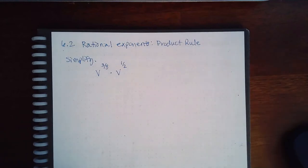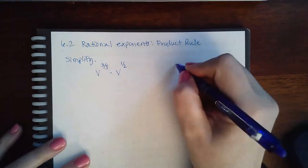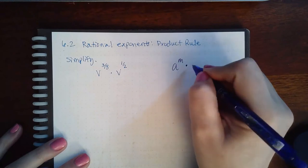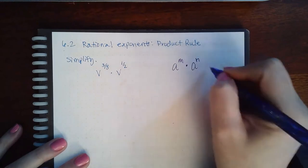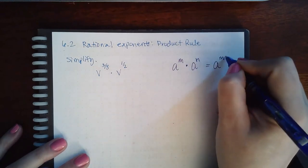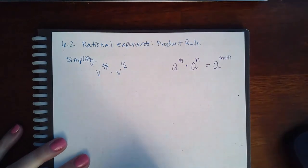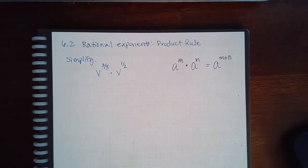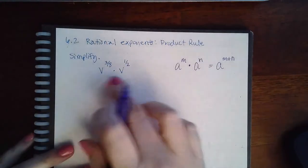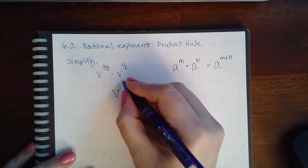Here we have simplifying rational exponents using the product rule. When you have variables, you can put them together. There is a rule that says if you have the same base, you can actually add their exponents together and just write the expression with one single base. So v and v, the base is v.